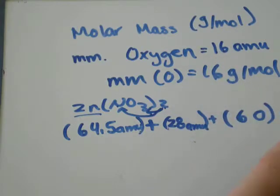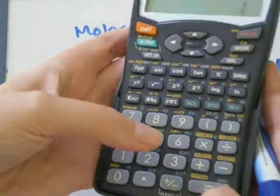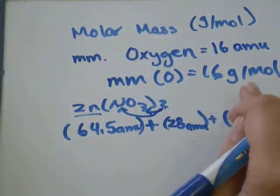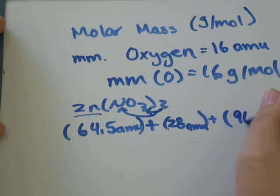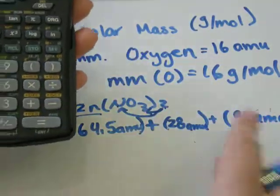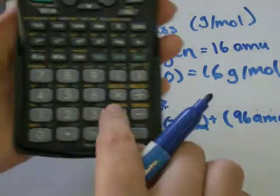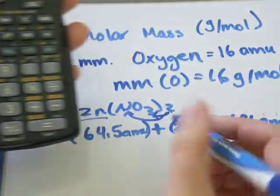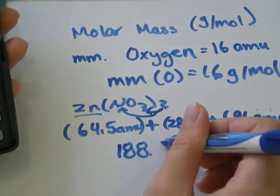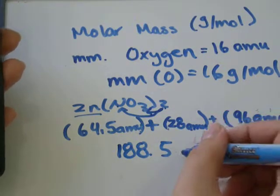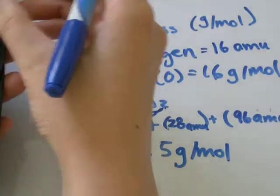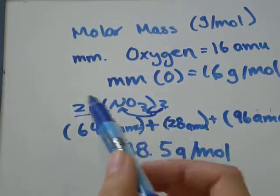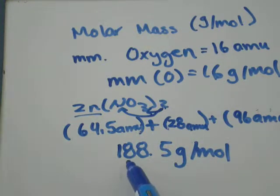Oxygen we found was 16 amu. So all I'm going to do is go 6 times 16 equals 96 amu. And if I add that all together, 96 plus 28 plus 64.5 equals, I get 188.5. Think about your units, it's molar mass, it's always grams per mole. So, one mole of Zn(NO3)2 would have 188.5 grams in it.